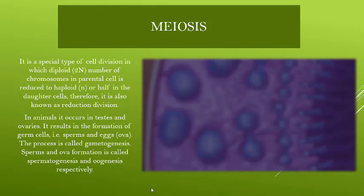Meiosis occurs particularly in animals, and of course in humans as well, in the formation of germ cells. The process of gametogenesis, in which sperm and ova are formed — spermatogenesis and oogenesis — involves the formation of gamete cells by the process of meiosis.